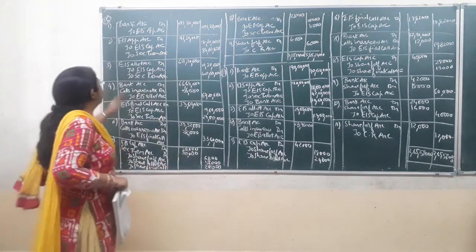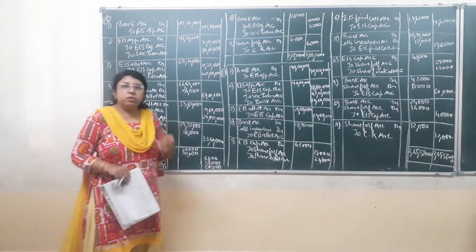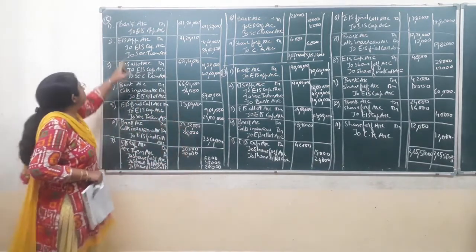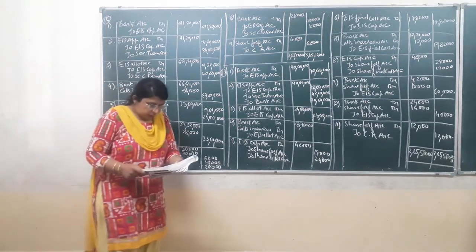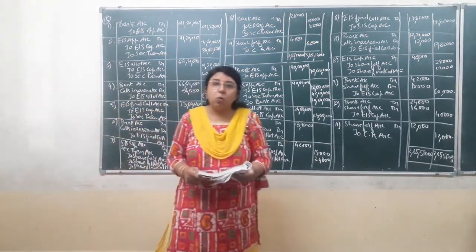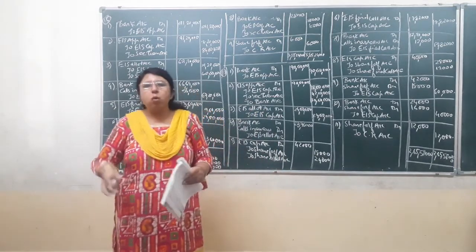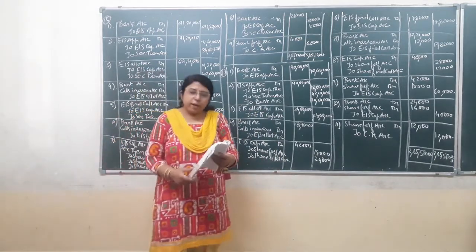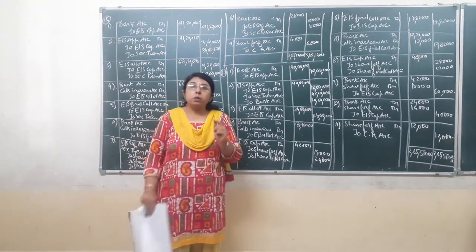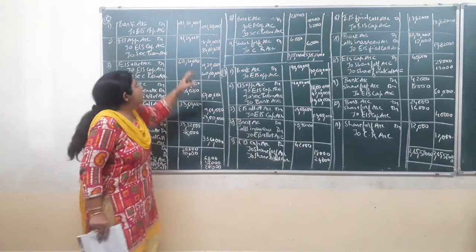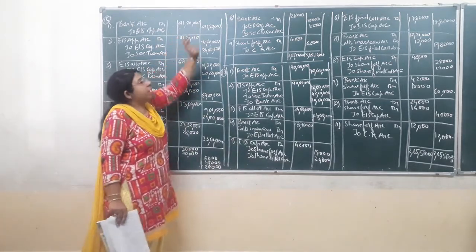Let us see the formula. The first journal entry is when the company receives the application money. Bank account is debited and equity share application account is credited. The amount is 2,04,00,000, that is for 2,04,000 shares. There is no oversubscription. So 2,04,000 shares multiplied by Rs. 38 including premium will give 2,04,000 multiplied by 38.